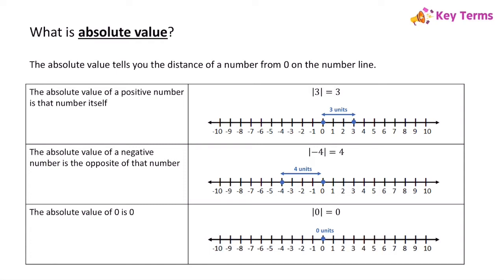If we're taking the absolute value of a positive number, like the absolute value of 3, that's going to equal that number itself — so the absolute value of 3 is equal to 3. The absolute value of a negative number will be the opposite of that number, so the absolute value of negative 4 equals positive 4, because negative 4 is 4 units away from 0. The absolute value of 0 is 0, because 0 is 0 units away from 0 on the number line.